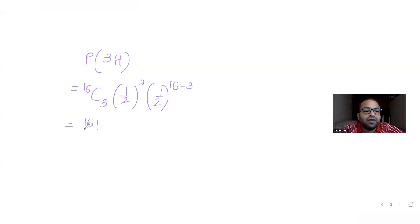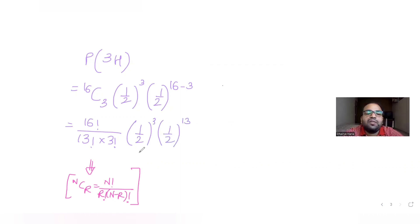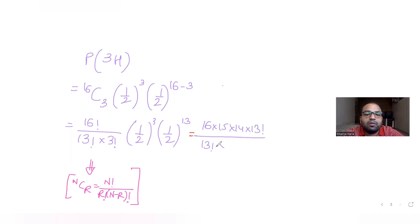So P(3 heads) = 16C3 × (1/2)^16. Now 16C3 = 16! / (13! × 3!). Expanding: 16 × 15 × 14 × 13! divided by 13! × (3 × 2 × 1). The 13! cancels. Then 3 cancels with 15 to give 5, and 2 cancels with 14 to give 7.